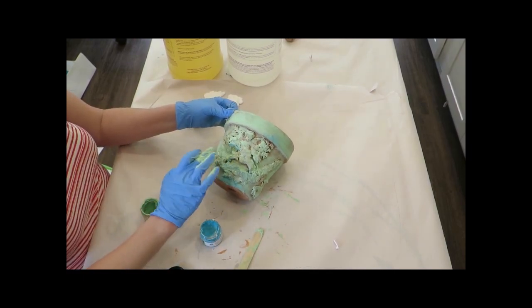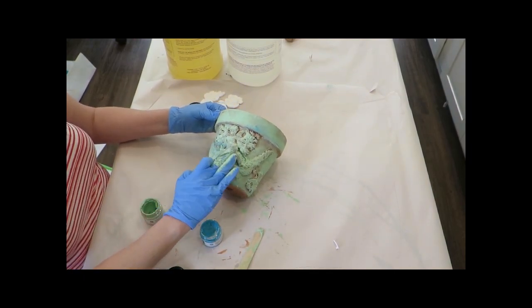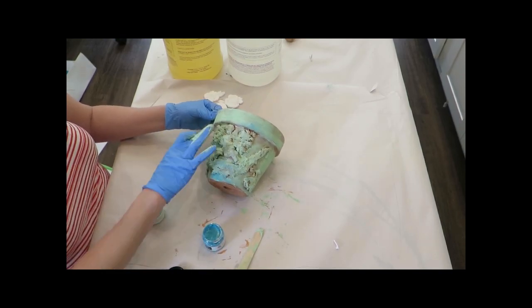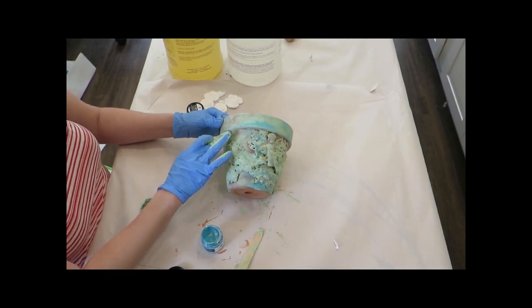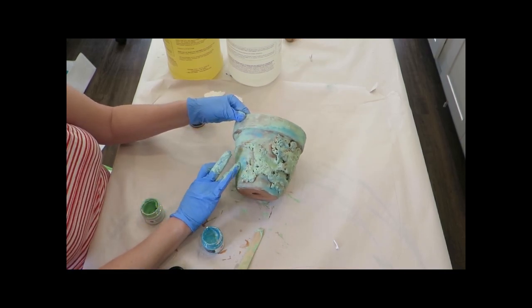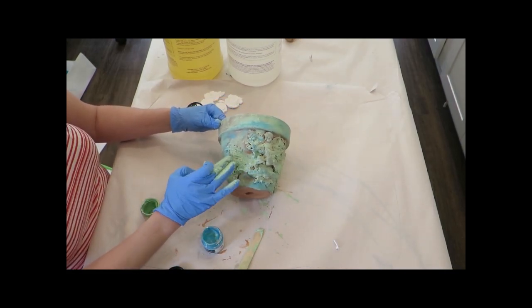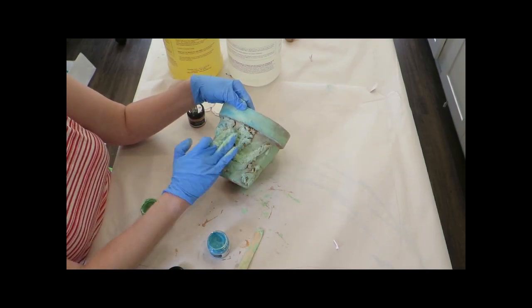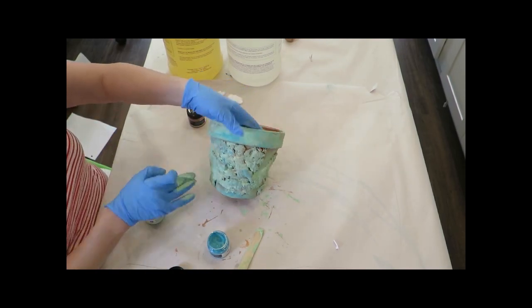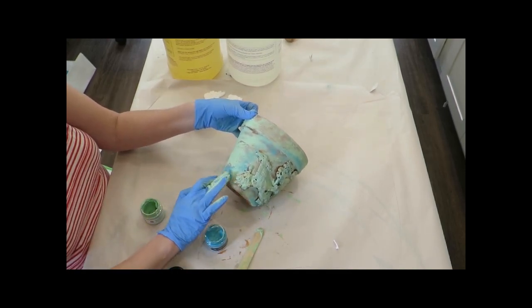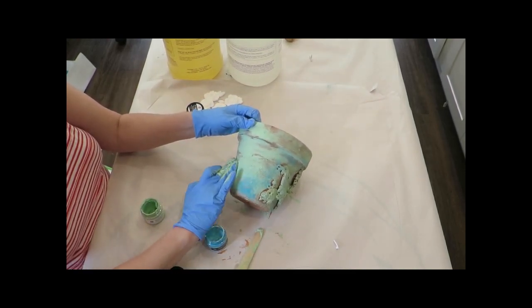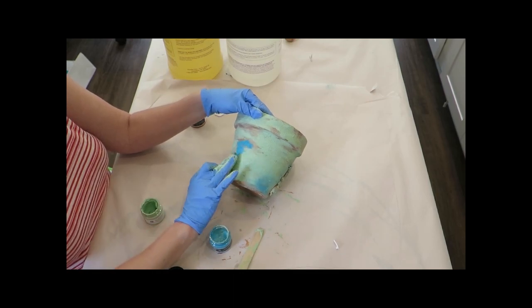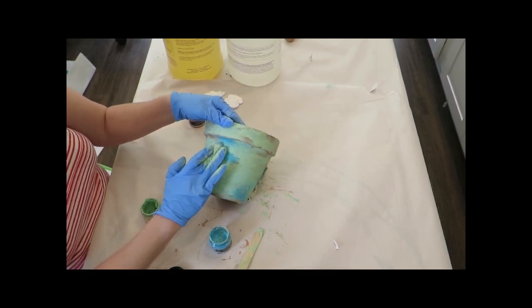All right so now I'm going to take the blue. This blue is really creamy, it's a lot different texture than the green. I'm just dabbing it on randomly - there's no science to this. You're just kind of putting it on in random places and in a lot fewer places than you did the green one. So it's supposed to be sort of a vintagey layered look.